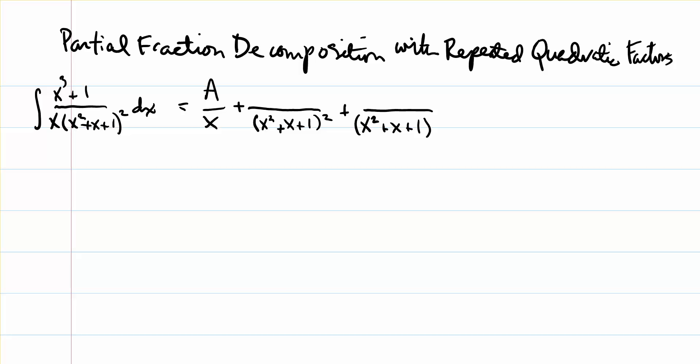If we started at 3, we would have one for the third power, one for the second power, one for the first power, and so on. The numerators of the partial fractions for the repeated quadratic factors are going to involve two letters: Bx plus C, and Dx plus E.